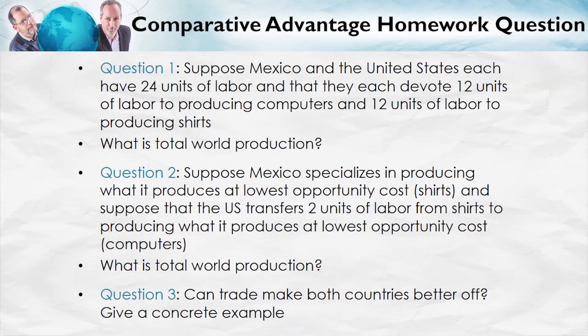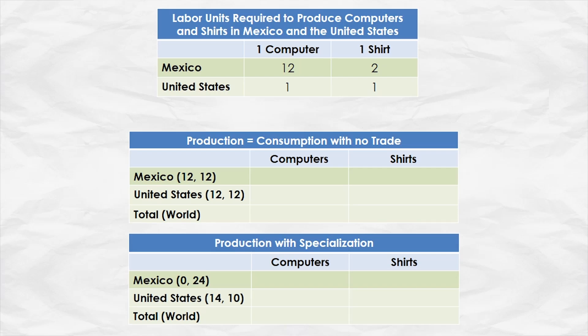To help you along, I want you to fill in these tables. Our basic table from which you'll draw the information is shown here. If both countries have 24 units of labor — half devoted to computers, half to shirts, no trade — production equals consumption. What is production in Mexico with 12 units of labor to computers and 12 to shirts? Same for the United States. Then, with specialization, Mexico has zero units in computers and 24 in shirts; the US has 14 units in computers and 10 in shirts. What's total world production? And can we find a price ratio at which trade makes both countries better off? We'll take that up in a later video.